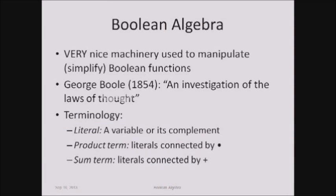What is Boolean algebra? Algebra is the way of representing quantities with symbols, where formulas are represented with symbols and manipulations are done over those symbols. Boolean refers to binary variables which can accept only zero or one. So Boolean algebra is the way of representing quantities with symbols, where those symbols can only hold two values: either zero or one.